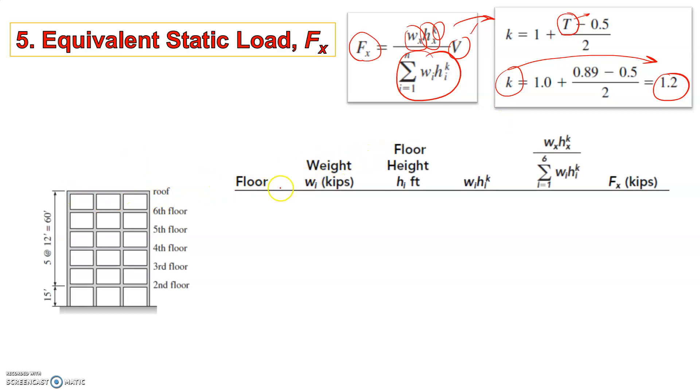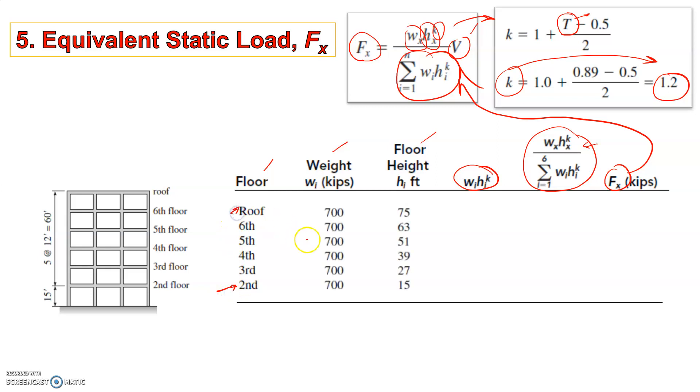Then we need to make a table to calculate certain quantities which involves floor, weight of each floor, floor height. And based on Wi*hi we can calculate this quantity which is Wi*hi to the power K and quantity like this one. And then finally Fx which is just multiplying this quantity with the value of V. Now from here we see that the floors have been written down here starting from second floor to the roof. Since it's given in the question we know that the floor weight is 700 kips per floor. The height is written from the base. This is the datum and this is 15 and this is 27 from the base. And so on.